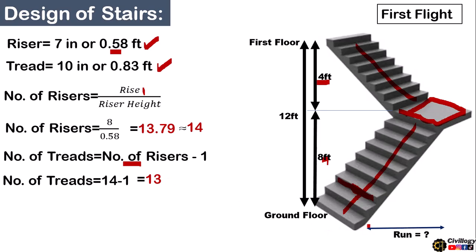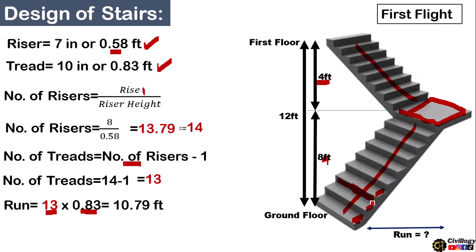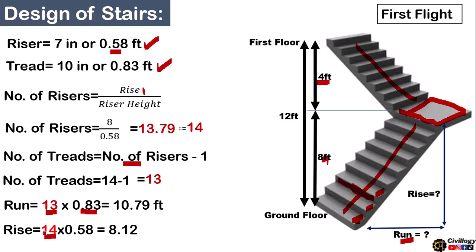To calculate the horizontal distance the first flight will cover, use: run = number of treads × width of tread = 13 × 0.83 = 10.79 feet. This is called the total run. To cross-check: number of risers (14) × riser height (0.58) ≈ 8 feet, which confirms our rise value is correct.